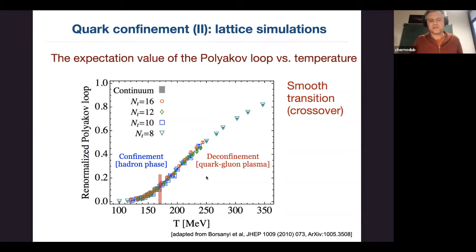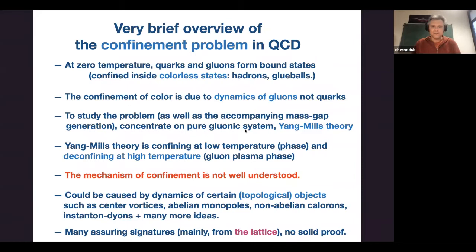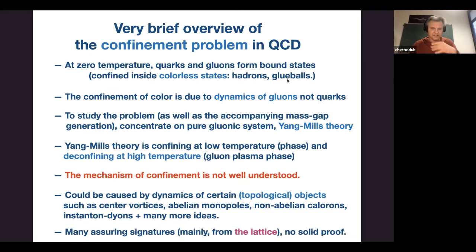It's a smooth crossover — not a true phase transition — between the confining low-temperature phase and the deconfining phase. At zero temperature, quarks and gluons form bound states called hadrons, and possibly glueballs made only from gluons. Those confined excitations don't carry color quantum numbers. Confinement is due to gluon dynamics, not quarks — so we can study pure gauge theory, disregarding dynamical quarks.